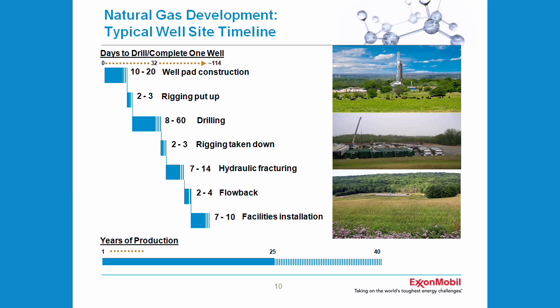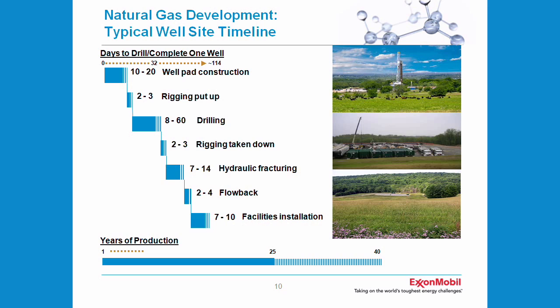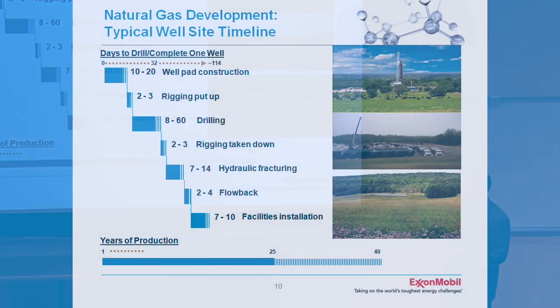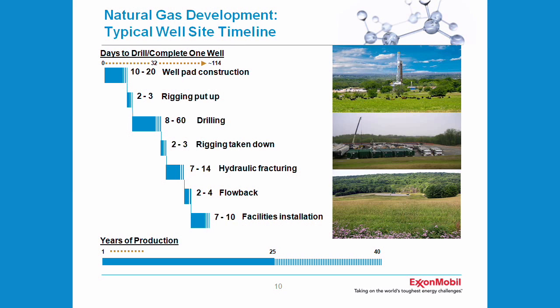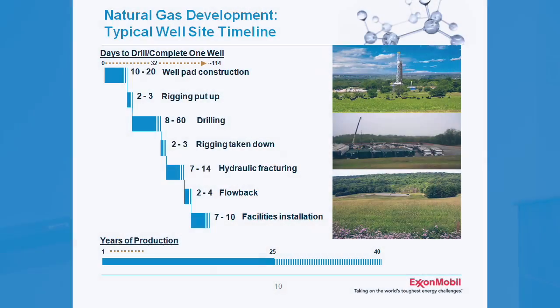So how long does this take? It looks like a big operation but relative to how long this well will be producing, it's a very small amount of time. Shown here is a timeline for a typical gas well from the start of pad construction through drilling to when it's set to facilities and producing. It is anywhere from 30 to 100 days depending on drilling time and the time to frack, which depends on the lateral length. The Marcellus in western Pennsylvania is about 6,000 feet depth below the surface. Some other plays in southern Oklahoma, Arkansas, and Louisiana may get as deep as 14,000 feet. But in a matter of days of drilling and completing and installing facilities, this well will produce for 25 to 40 years of gas.